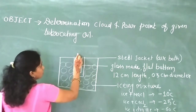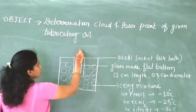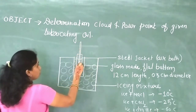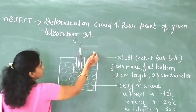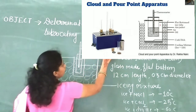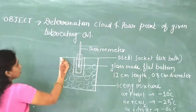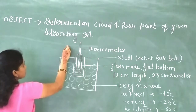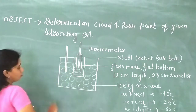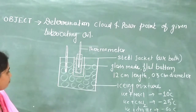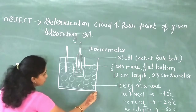The test jar has a single-hole cork, and through this hole we insert a thermometer to measure the temperature of the oil. One more thermometer is also immersed in the icing mixture so we can measure the temperature of the icing mixture.